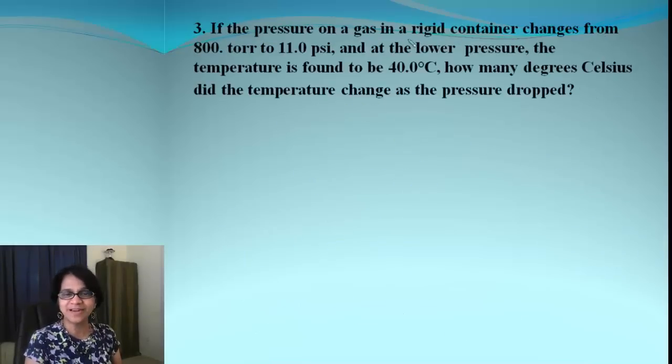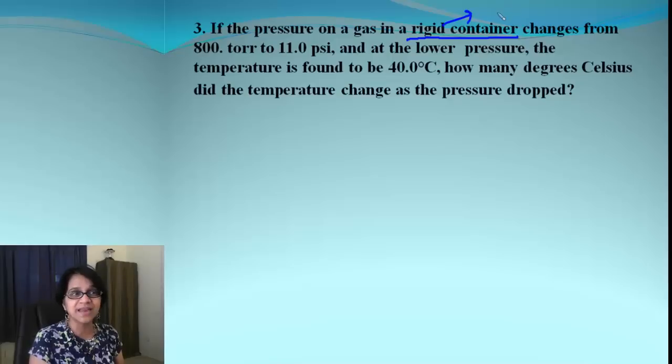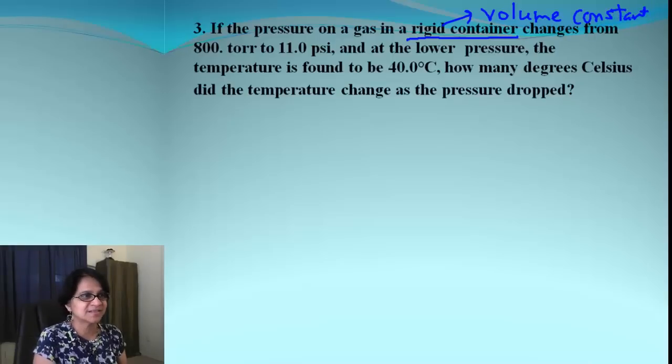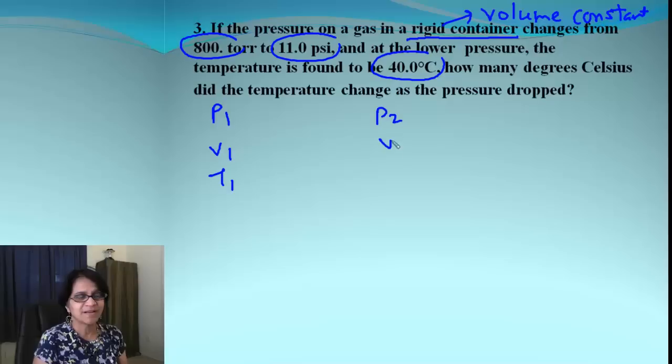Okay, in this problem, look at the first wording. It says it's a rigid container which indicates the volume for that gas is constant. It is same. Let's circle the givens and start listing up. So that's pressure P1, V1, T1.